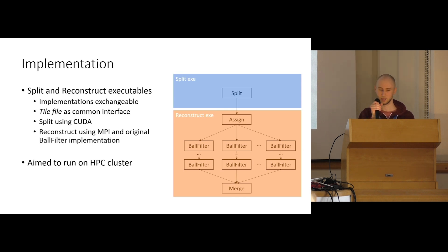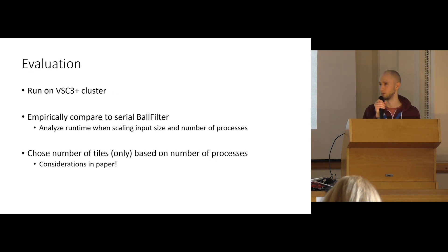For the implementation, we decided to split the pipeline into two executables. First one being just a splitting of the point cloud. The second one being everything else. So this actually has the advantage that we can exchange one or the other for any other implementation. Maybe we could split any other way or use some other reconstruction algorithm that has a guarantee in the edge length. And as a common interface between those two parts, we use the file system. We use a file format. And the split was implemented using CUDA on a GPU. And the reconstruct was implemented using MPI and the original ball filter implementation as well. And all of that was so we could run them on a high performance computing cluster.